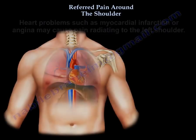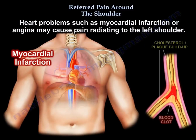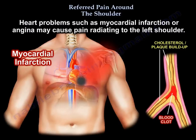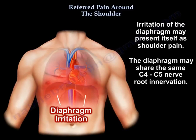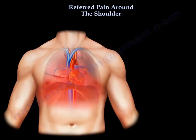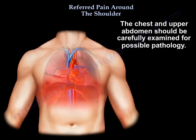Heart problems such as myocardial infarction or angina may cause pain radiating to the left shoulder. Irritation of the diaphragm may present itself as shoulder pain, as the diaphragm may share the same C4-C5 nerve root innervation. The chest and upper abdomen should be carefully examined for possible pathology.